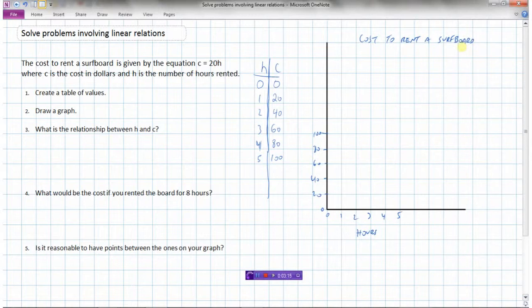And now I can plot my points. So I've got a point here at 0, 0. I've got a point here at 1, 20. I've got a point here at 2, 40, 3, 60, 4, 80, and 5, 100.